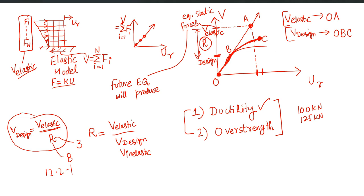Let's talk about the second factor, Cd. Cd is called the displacement amplification factor. As the name indicates, it is used to amplify the displacements of our structure so that they become inelastic or more realistic displacements.